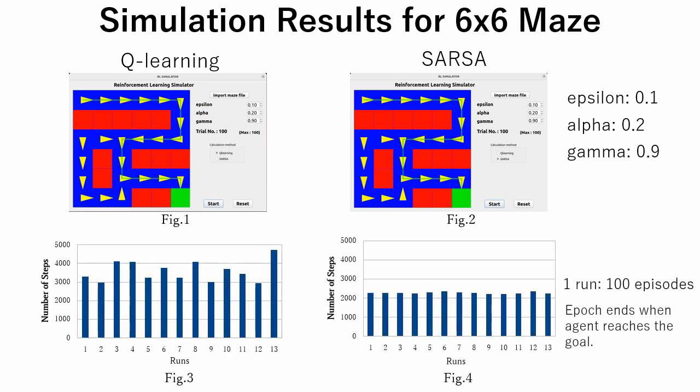In figures 3 and 4, number of steps performed to solve a 6x6 maze task are compared. Number of episodes in one run is 100. Results for 13 runs are shown. We can see that SARSA uses less steps compared to Q-learning.